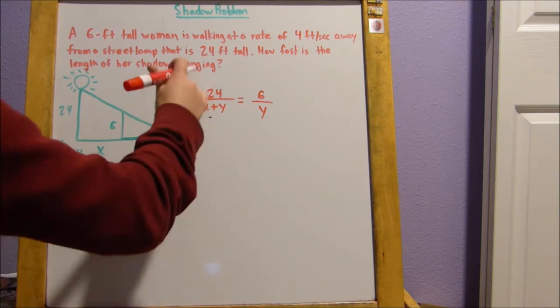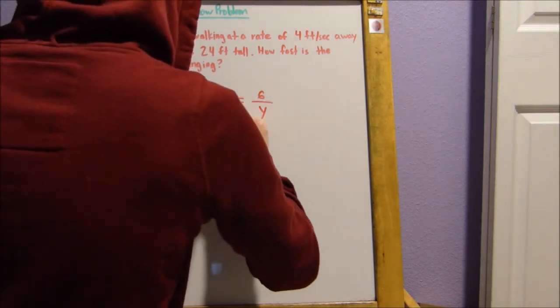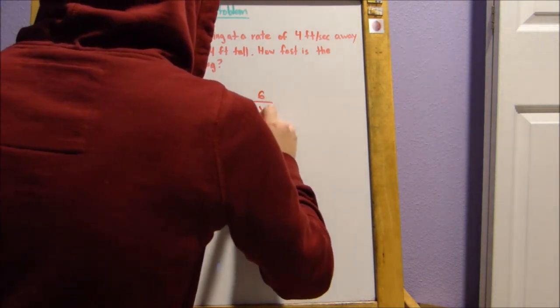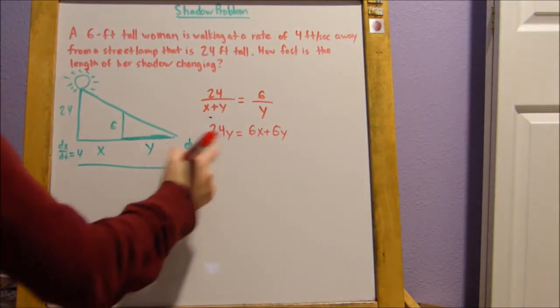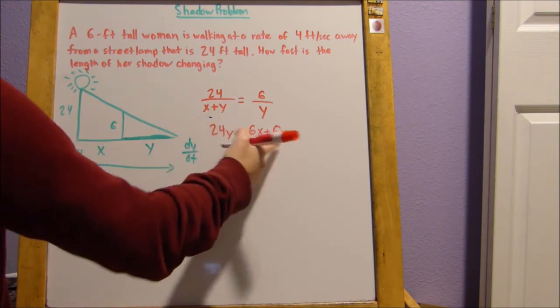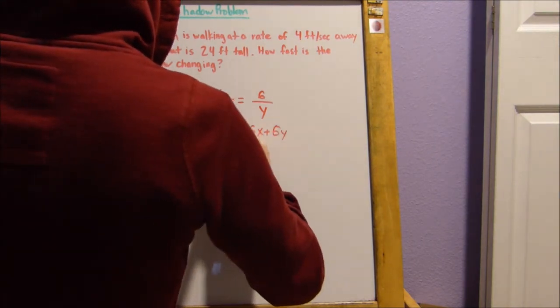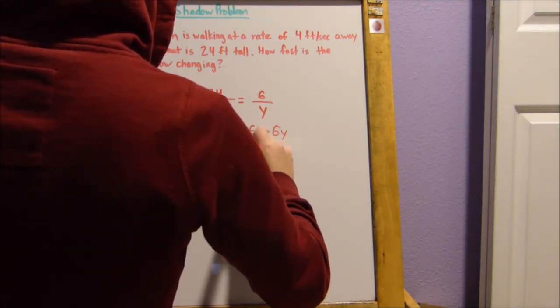So what we're going to do next is we're going to cross multiply. So we get 24y equals 6x plus 6y. Next, what we're going to do is we're going to subtract 6y from both sides. So we get 18y equals 6x.